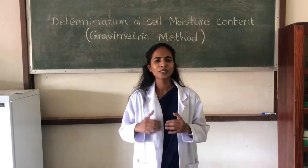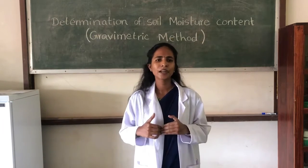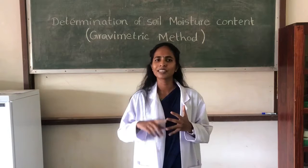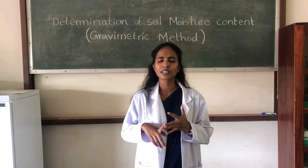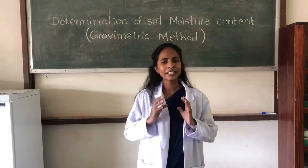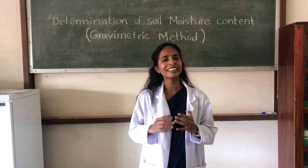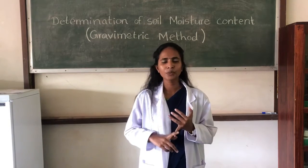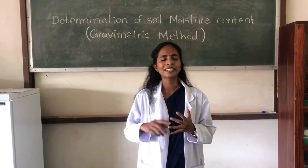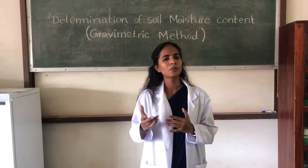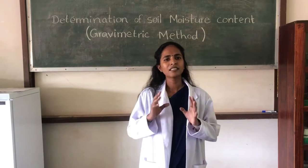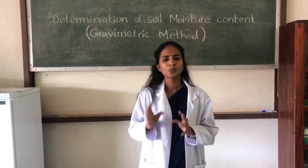Soil moisture is an important parameter governing meteorological, hydrological, agricultural, as well as climate-related events. Soil moisture determination is essential in irrigation scheduling, planning irrigation systems, and determination of other soil parameters such as bulk density in agricultural perspectives.